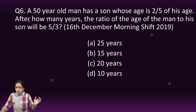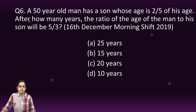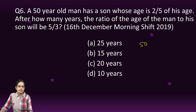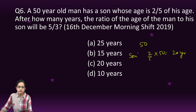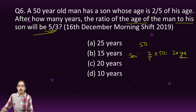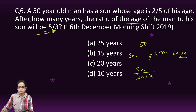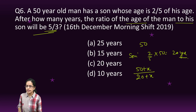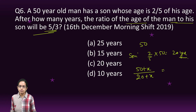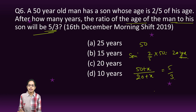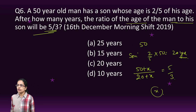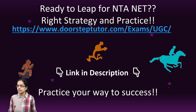A 50-year-old man has a son whose age is 2/5 of his age, so the son's age is (2/5) × 50 = 20 years. After how many years will the ratio of the man's age to the son's age be 5:3? Set up (50 + x) / (20 + x) = 5/3, solve this equation to find x — the number of years required.